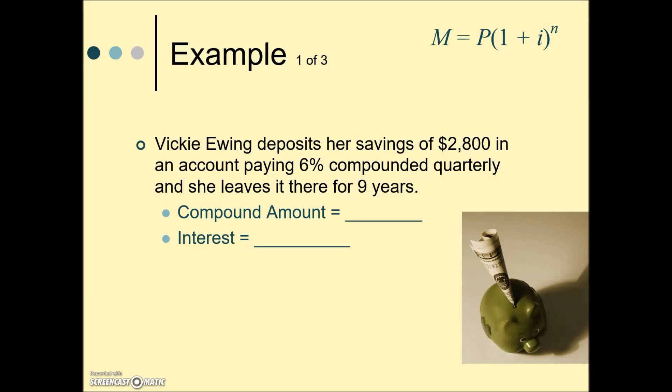Here we have Vicki Ewing deposits her savings of $2,800 in an account paying 6% compounded quarterly and she leaves it there for nine years. They're asking us for the compound amount M and then for the interest. Before we can calculate M though, we need to determine what i is and also n. Just like those examples we just worked, i, the interest rate per compounding period, will be found by taking the interest rate which is 6% and dividing it by the frequency of the compounding. Quarterly is associated with 4, so our i will be 1.5%. And n, the number of compounding periods, is found by the number of years times the compounding number of times per year, which is 36.